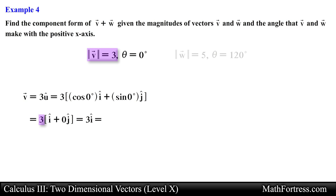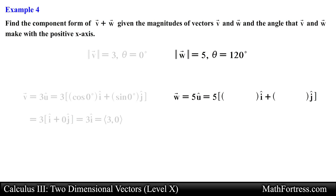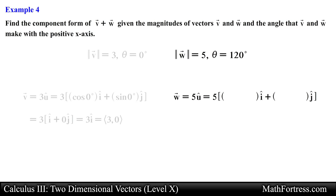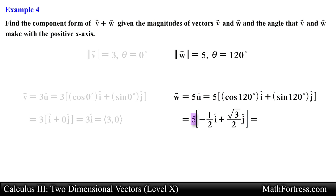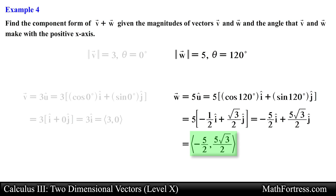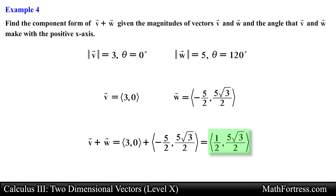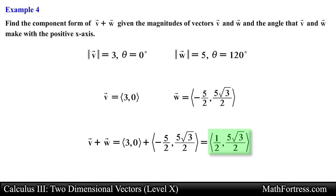Multiplying the unit vector by the magnitude of vector V gives components 3 and 0. For vector W at 120 degrees, I hat equals cosine of 120 degrees and J hat equals sine of 120 degrees. Multiplying each component by the magnitude of W gives negative 5/2 and 5 root 3 over 2. Adding the two vectors component-wise gives the resultant vector: 1/2 I hat and 5 root 3 over 2 J hat.